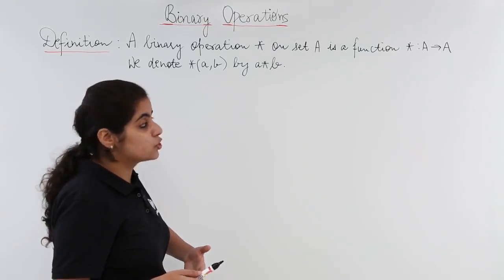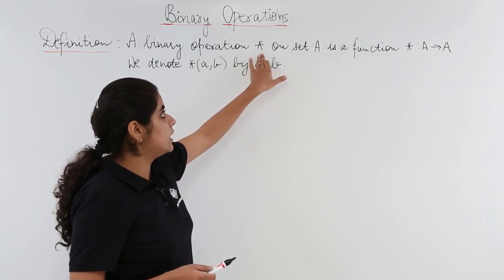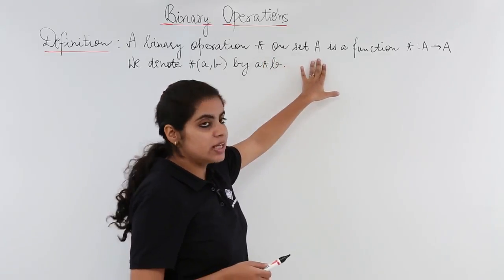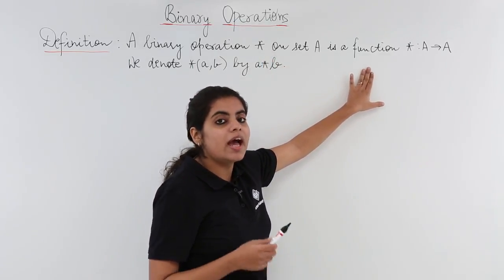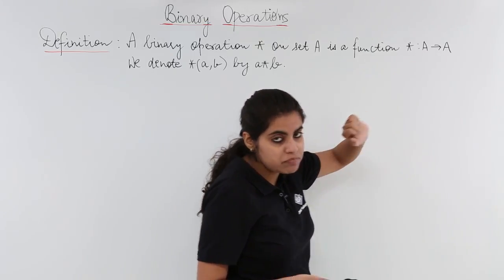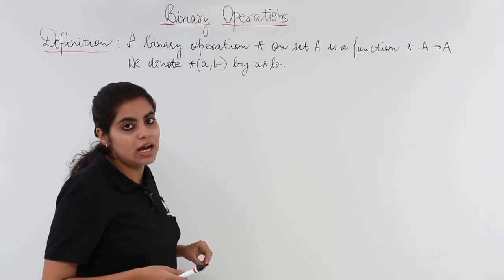Let's read the definition. A binary operation star - it is read as star or asterisk sign - on the set A is a function, and the function is from A cross A to A, denoted by A star B.